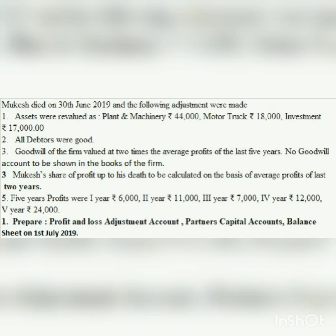In retirement: goodwill to retiring partner, and continuing partners to goodwill. Here in death chapter: goodwill to deceased partner (death), and continuing partners to goodwill - only 'retirement' is replaced by 'death', everything else remains the same. Adjustment 4: Mahesh's share of profit up to his death is calculated on the basis of average profit of last 2 years. He died 3 months into the financial year, so he gets profit for those 3 months.